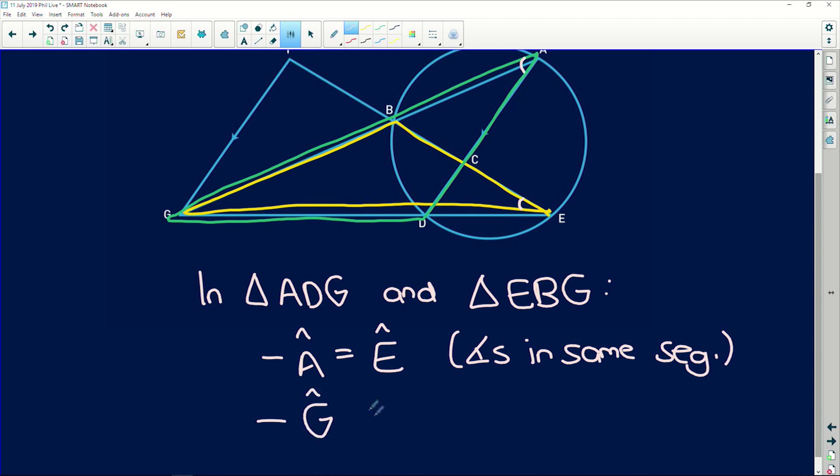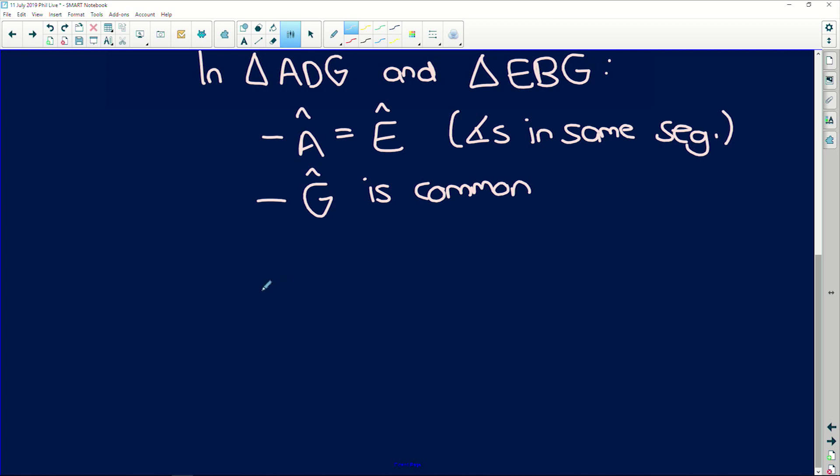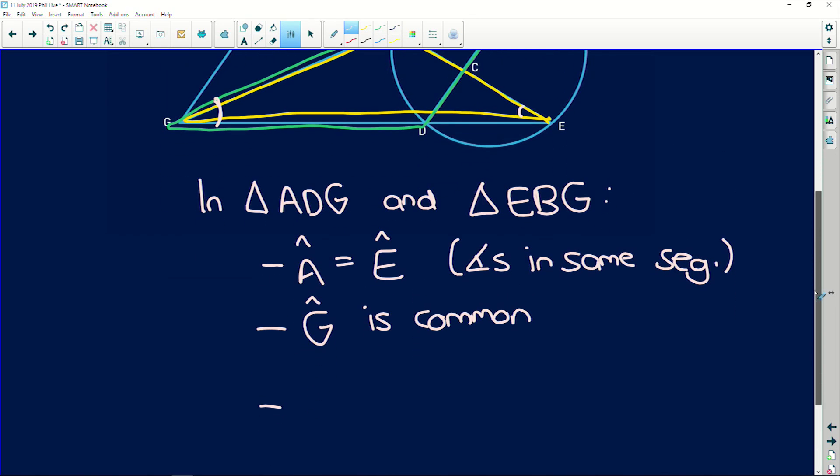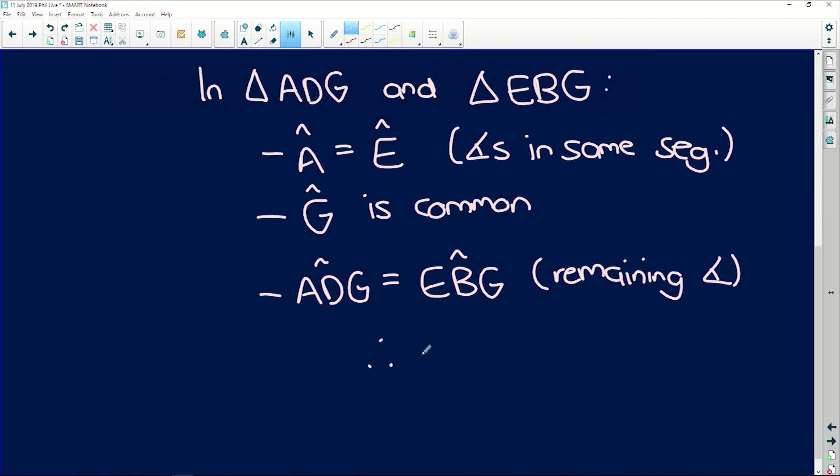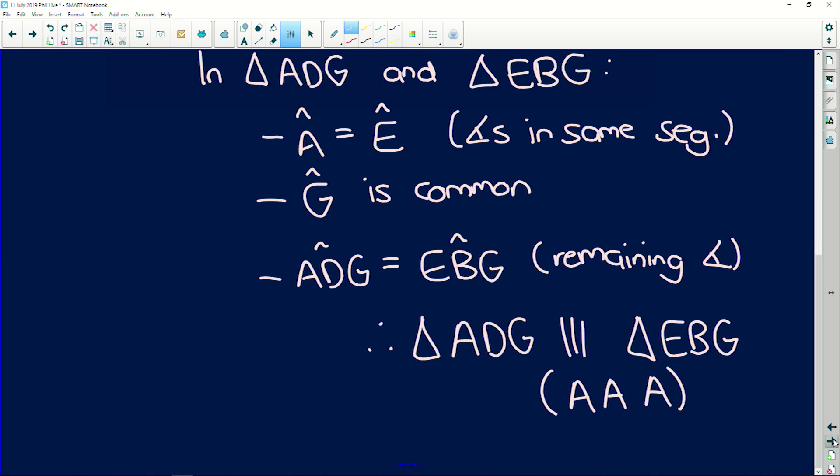Secondly, angle G is common. Basically, what that means is that angle G falls in both triangles. It is common to both triangles. And lastly, you can say angle, it'll be ADG, is equal to angle EBG, because it is the remaining angle in the triangle. Therefore, what you can conclude, triangle ADG is similar to triangle EBG, and your reason is angle, angle, angle. Easy peasy.